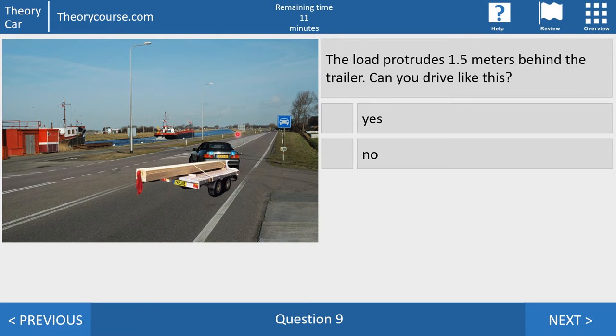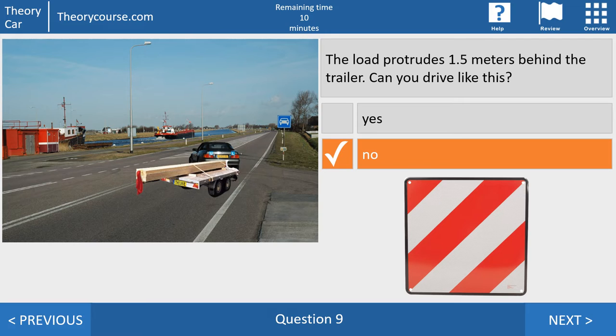Question number nine. The load protrudes 1.5 meters behind the trailer. Can you drive like this? Yes or no? The right answer is no. If the load protrudes more than 1 meter after the trailer, you must use this red-white marking sign. So no. Red T-shirt or red plastic bag or red whatever. Red flag. Nothing.